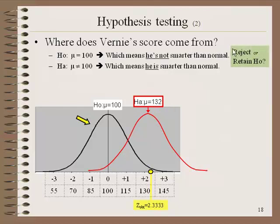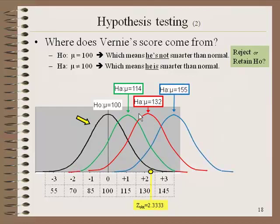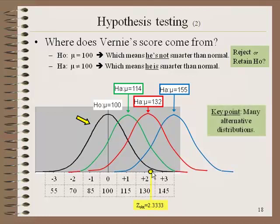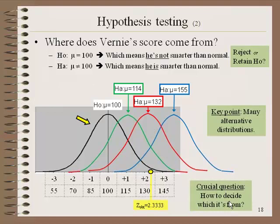What we're trying to do is make the decision: do we reject or retain the null hypothesis? We should bear in mind that there are a number of alternative distributions — I could show as many as you'd like, going both left and right. We don't know what mu is for vegans; it could be higher or lower. The key point is there's only one null distribution, but there's an infinite number of alternative distributions. We need to establish a cutoff: how do we decide when to reject or retain?